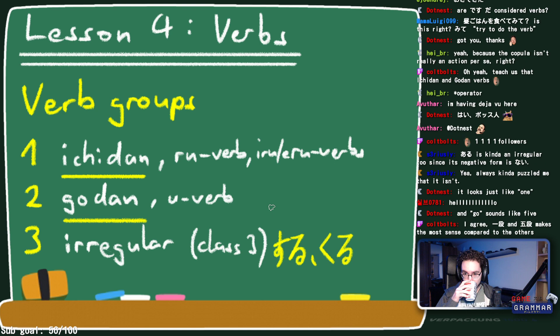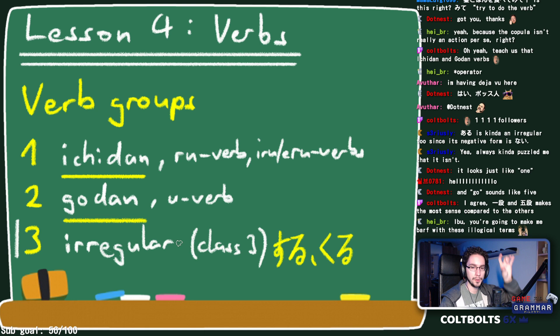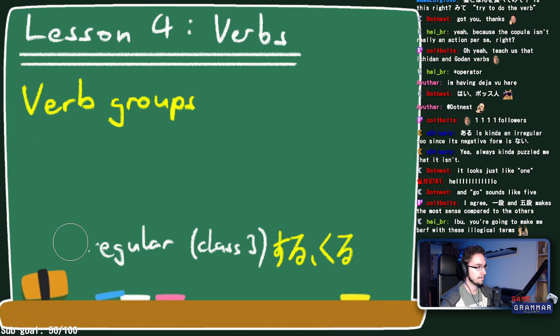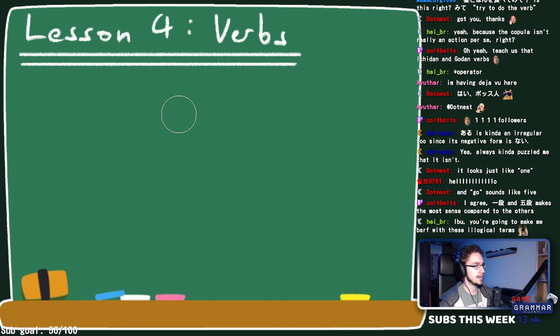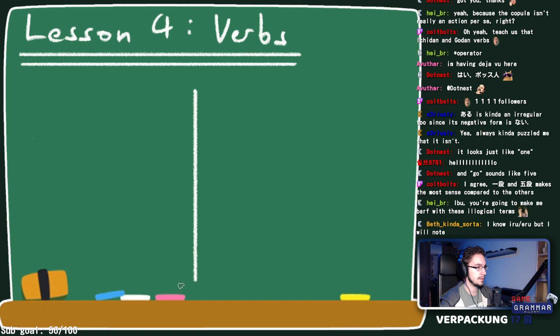Now let's look at ichidan and godan — what they are, how they're different, and most importantly how to recognize them, because you have to know which group a verb belongs to in order to conjugate it. The nice part is that once you've figured out the group, you can do basically any conjugation you'll ever want.